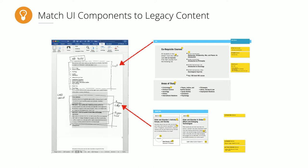In the workshopping part of the content session, we asked everyone to show up with one or two pages of content from the old website. We go to the old website, copy and paste text into a Word document, then look at that document alongside the component library and try to match pieces up. A list of stuff? Match it to a list component. A list of courses? Match it to a course card component. The first step is simply matching raw content to UI components.